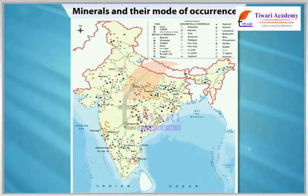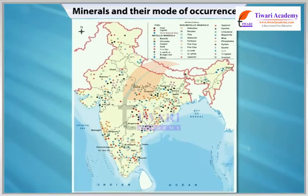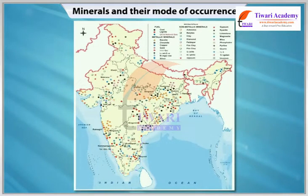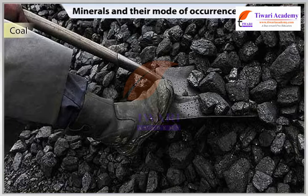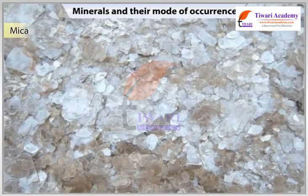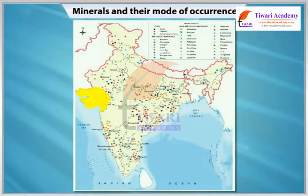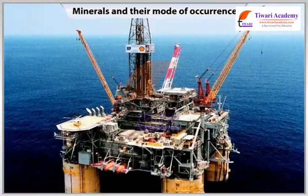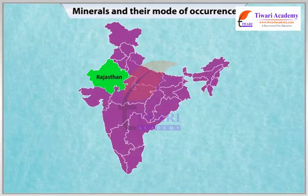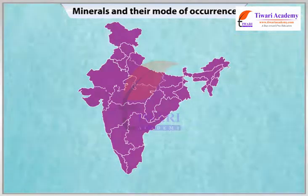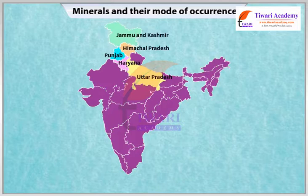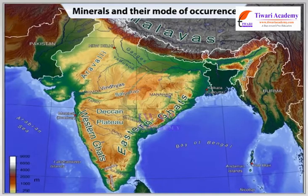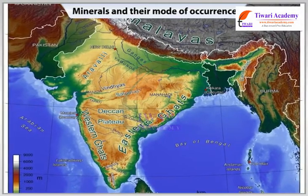India is fortunate to have fairly rich and varied mineral resources. However, the distribution of minerals has not been even. These are mainly confined to the peninsular region of the country. Broadly speaking, peninsular rocks contain the reserves of coal, metallic minerals, mica and many other non-metallic minerals. Sedimentary rocks on the western and eastern flanks of the peninsula, in Gujarat and Assam, have most of the petroleum deposits. Rajasthan has reserves of many non-ferrous minerals. The states of Uttar Pradesh, Haryana, Punjab, Himachal Pradesh and Jammu and Kashmir are deficient in mineral resources. These variations exist largely because of differences in the geological structure, processes and time involved in the formation of minerals.